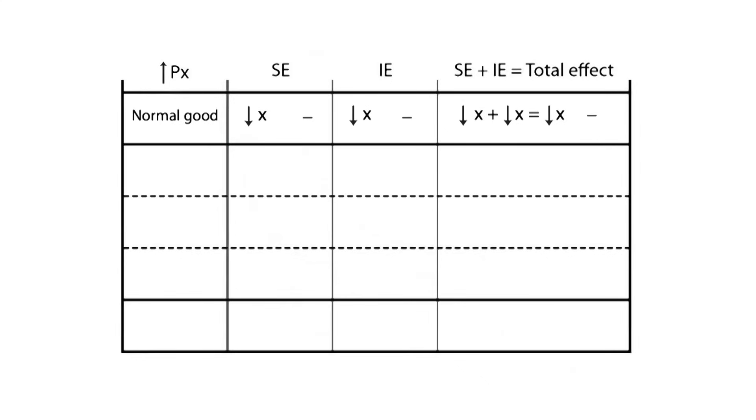When dealing with normal goods, an increase in its price will have a negative effect on both the substitution and income effect, and hence the total effect in welfare will also be negative. This is the exact opposite effect to the one analyzed before.